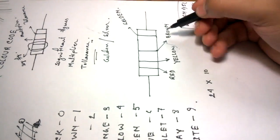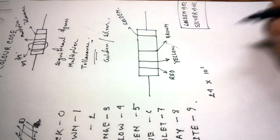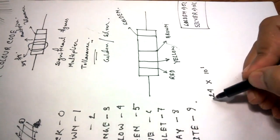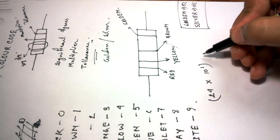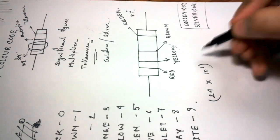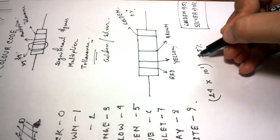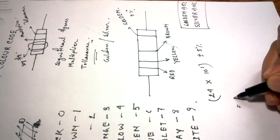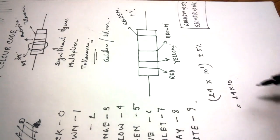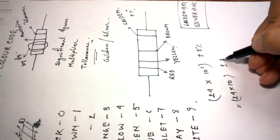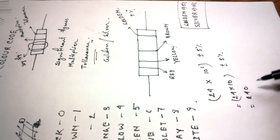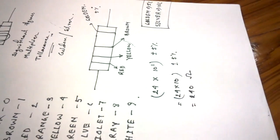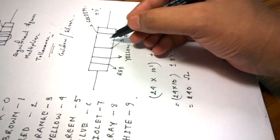Value of brown is 1, so 10 to the power 1. 24 multiply 10 to the power 1, the rest is golden, golden is 5 percent, so plus minus 5 percent equals 24 into 10 plus minus 5 percent, 240 ohms.